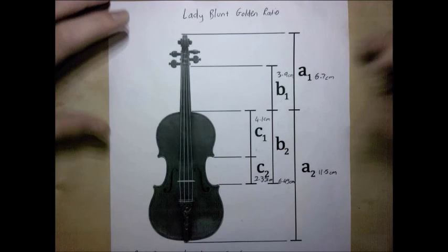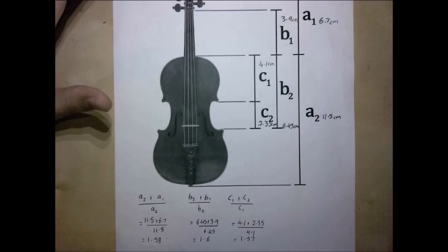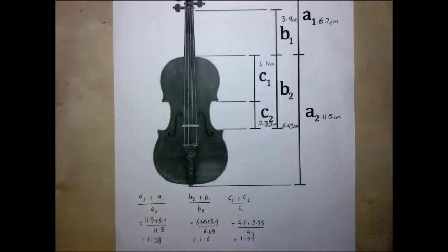These numbers were then substituted into these formulas. As you can see, these numbers were found, and they aren't exactly 1.618, which is what the golden ratio is, but they are extremely close. This might be because of errors in the actual measuring of the violin, or in the photograph itself. It might not be as scaled as what was once thought.